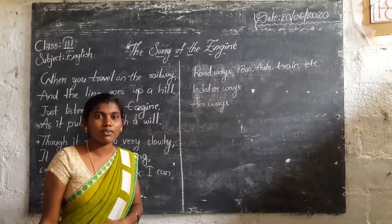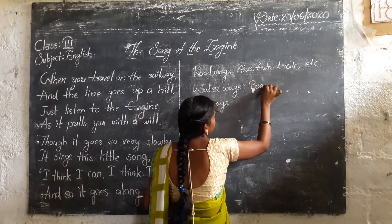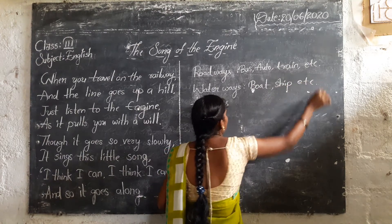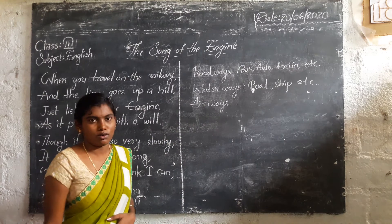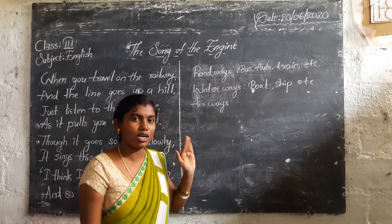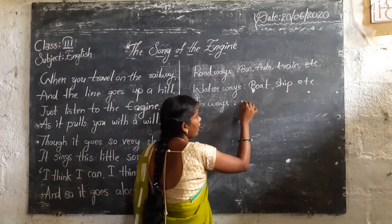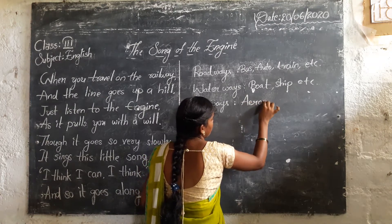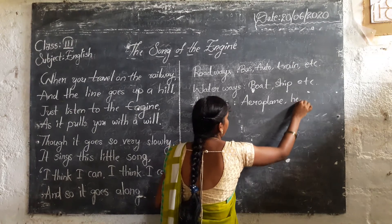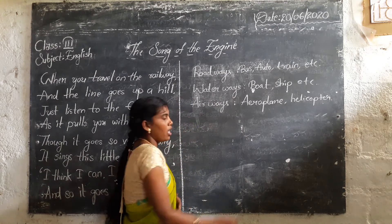Waterways — do you know waterways? We have a lot of waterways. Next, airways — do you know airways? Which vehicles move in the air? They are aeroplanes, helicopters, and some air balloons.